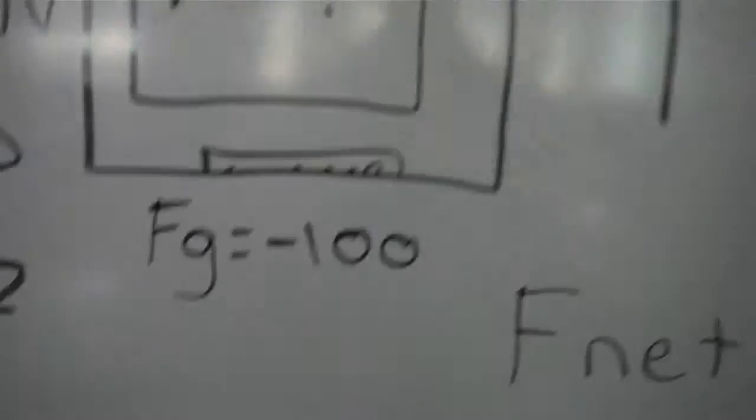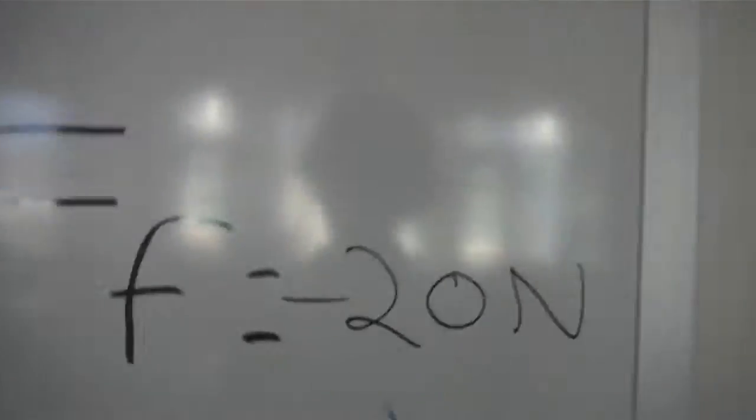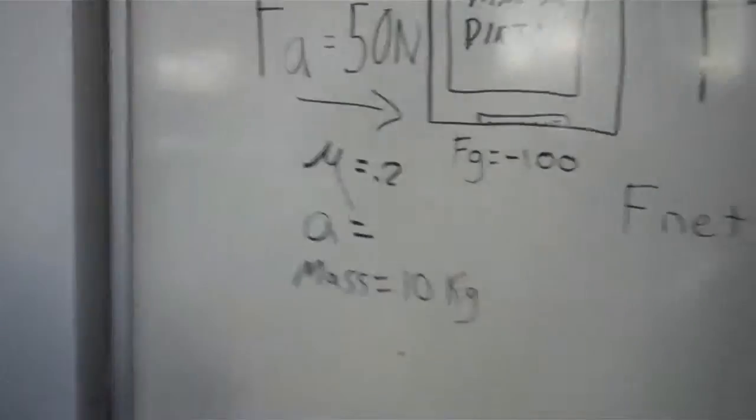Here, mu times FN equals FF. The sum of the forces equals 30 Newtons. The acceleration equals F net divided by mass.